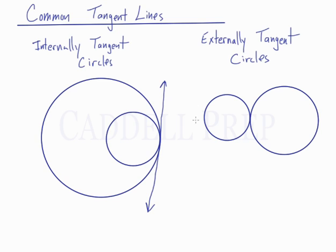And the question is, how many common tangent lines do these circles have? Well, similar to the internally tangent circles, they're tangent at one spot, so we could draw a tangent line there.